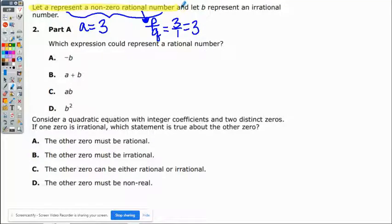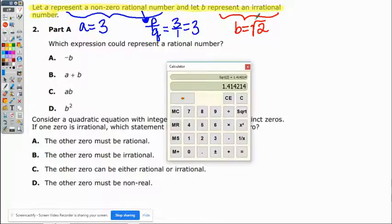Then the rest of the question says, and let B represent an irrational number. So what would an irrational number be? You do need to know an example of rational versus irrational. The easiest one is the square root of 2. The square root of 2 cannot be written as a fraction. It will never be something like a numerator divided by a denominator to exactly equate to the square root of 2.